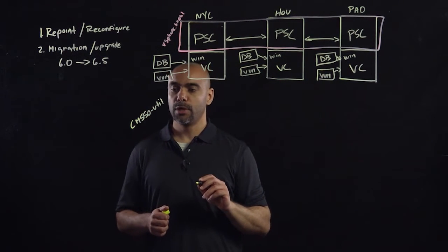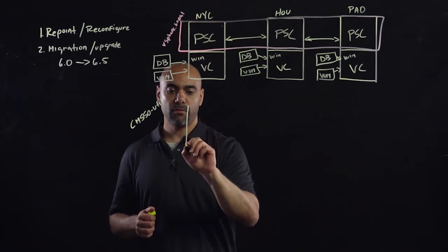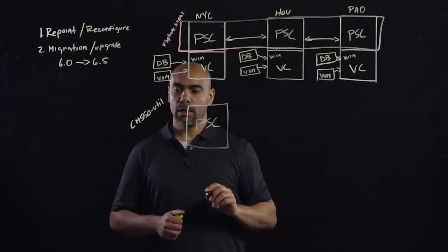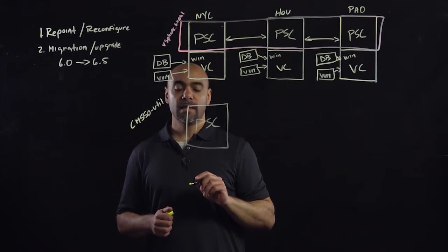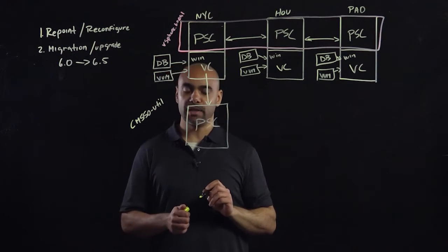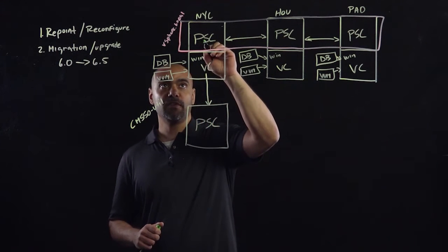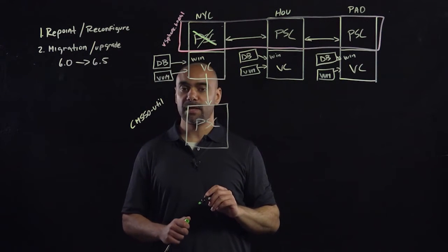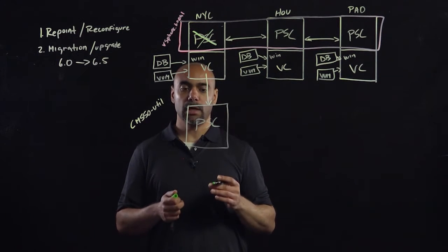What that's going to do is, when we deploy our external platform services controller, we're going to run CMSSOutil using the repoint reconfigure command. That is going to repoint the vCenter server to the external PSC, and then it is going to reconfigure it by removing and cleaning up the embedded PSC. So now we have a nice supported external deployment.